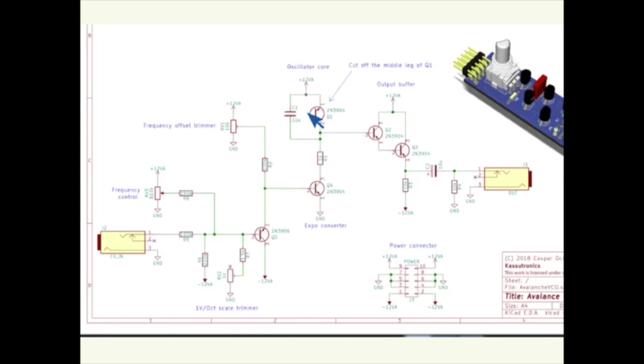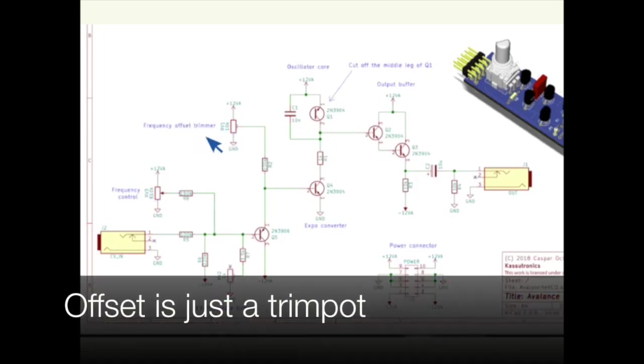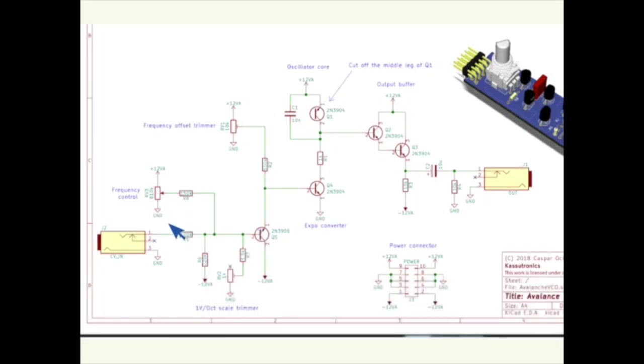And then he did an exponential converter, and a much nicer circuit over here, which takes care of the CV input, and the frequency range, and also an offset. And this is a much nicer approach, which gives you, it's not perfect, but it's quite good exponential control. And then you have the oscillator circuit, and he also has an output buffer.